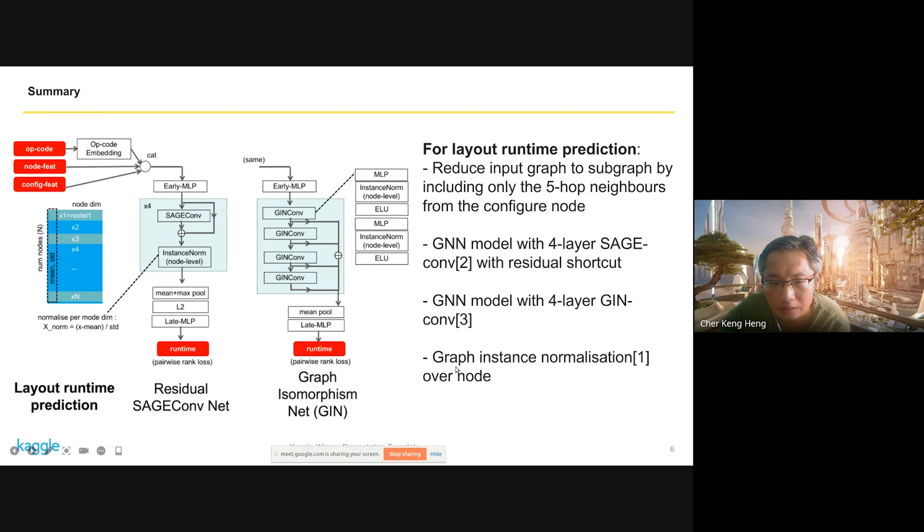One thing I found that works is graph instance normalization. I have the paper linked on the next page. Basically, this is the matrix of the graph features. Here I have the node dimension and the number of nodes for one graph.